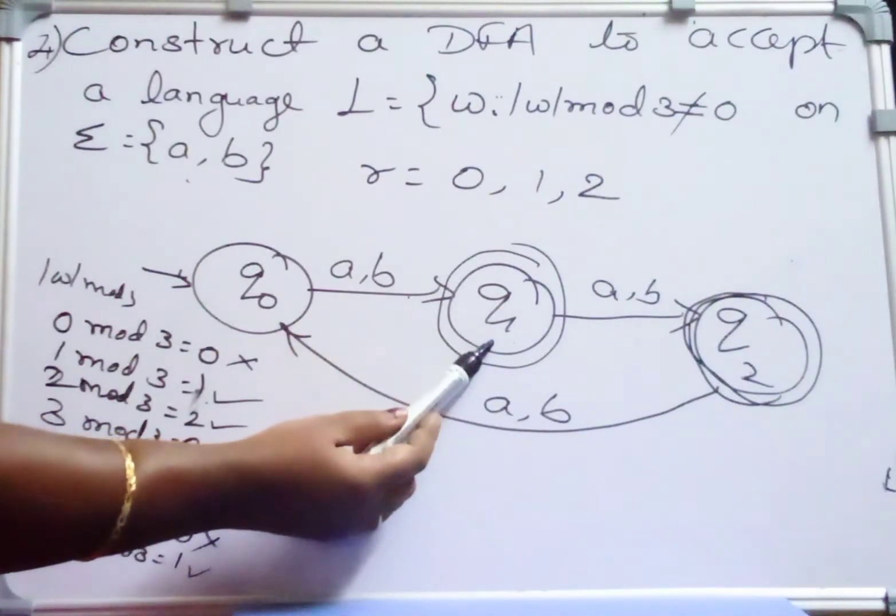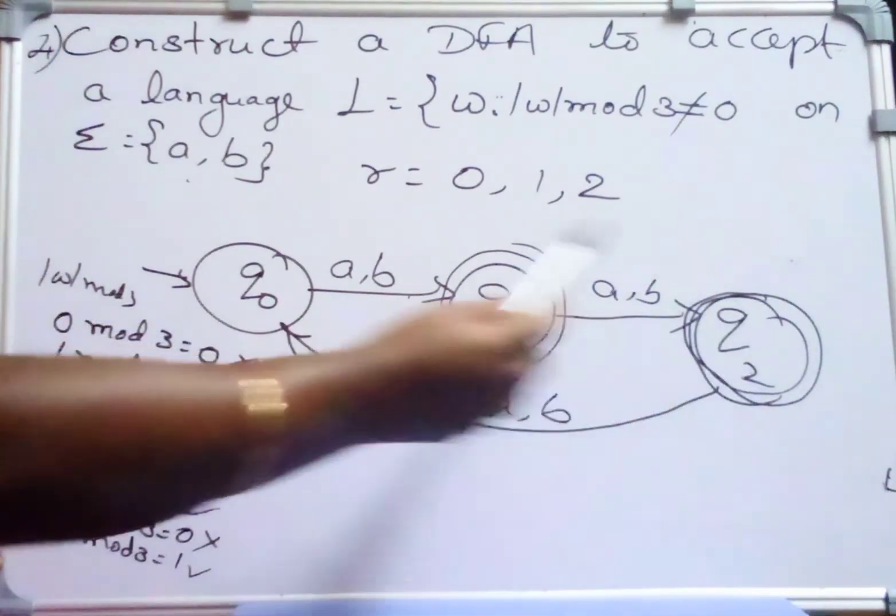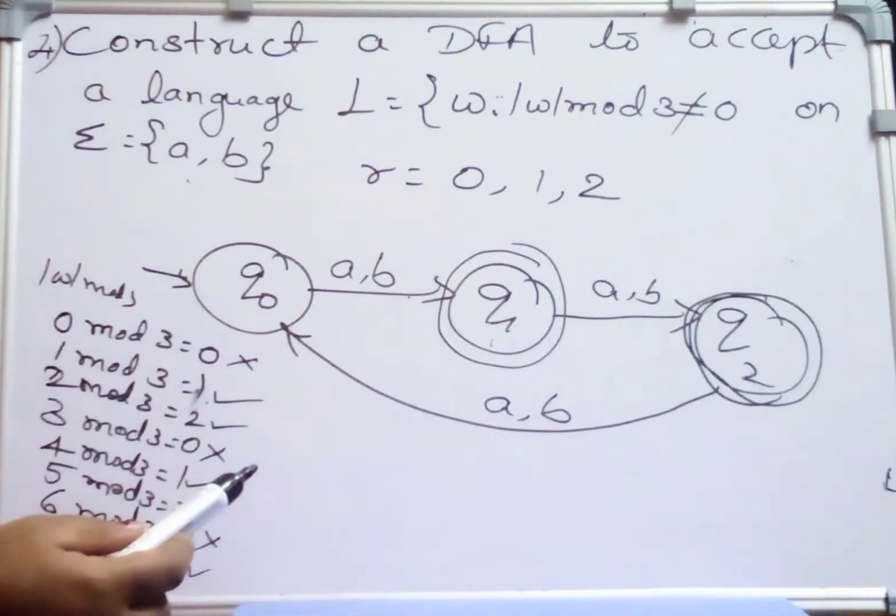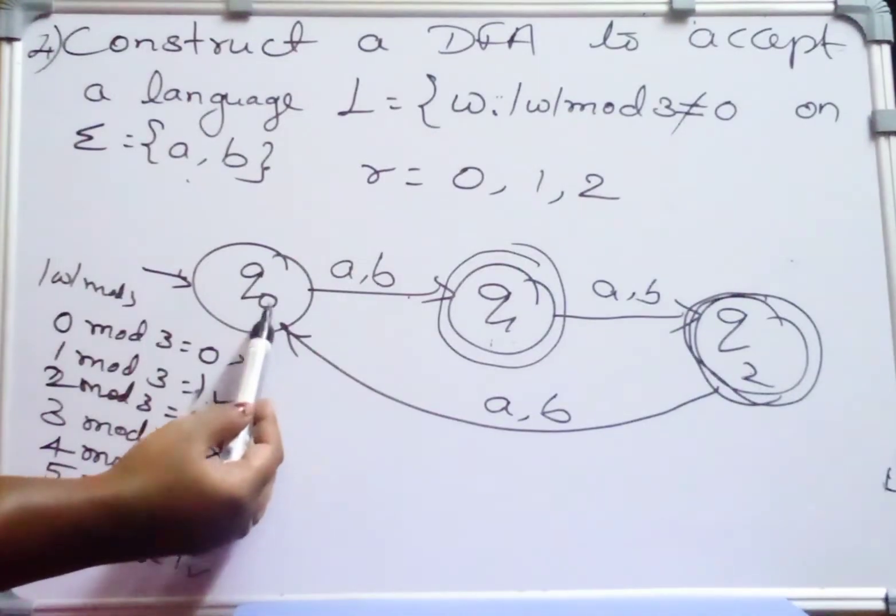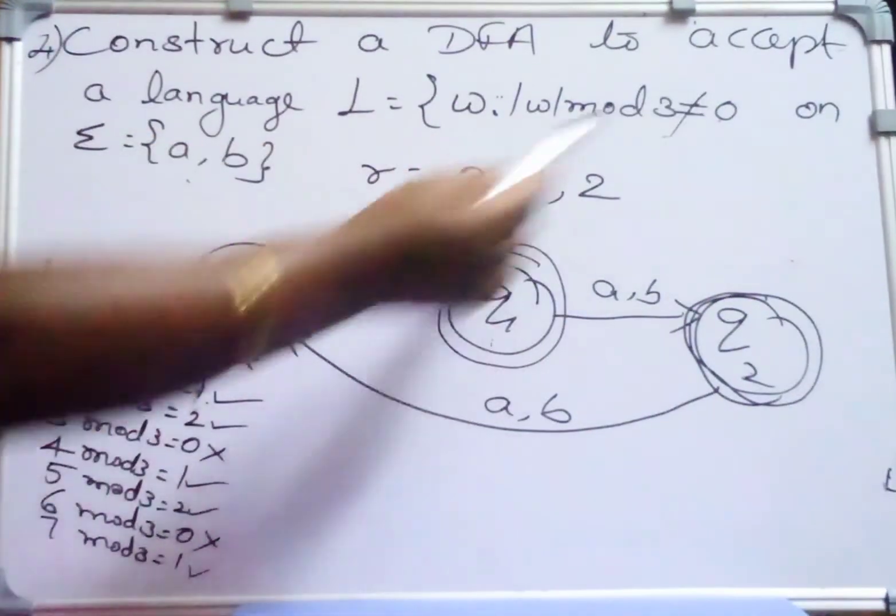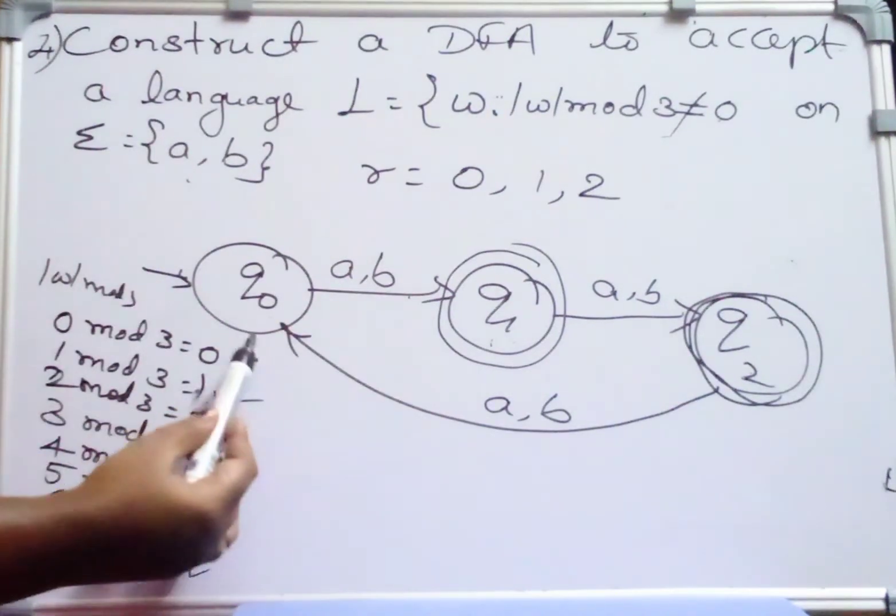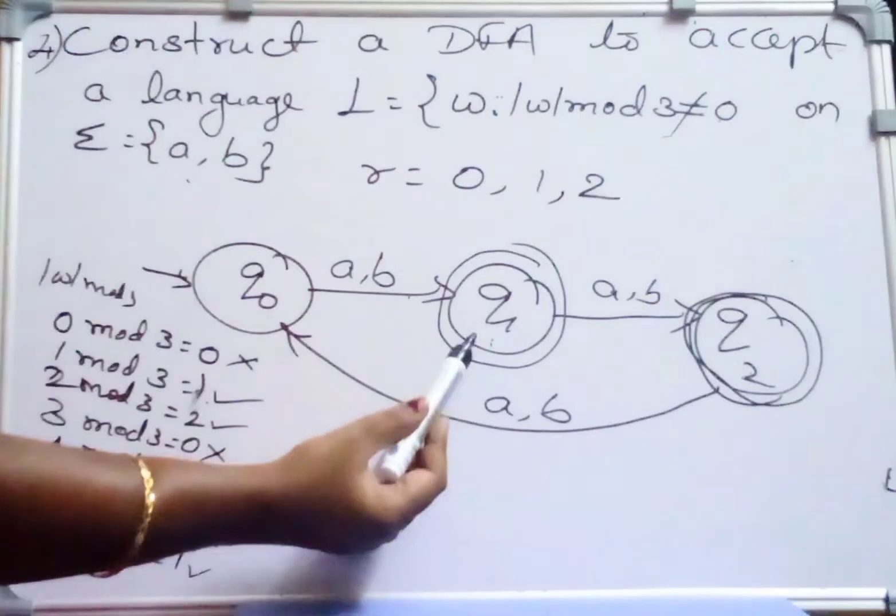Q1 represents all the strings with remainder 1 and Q2 represents all the strings with remainder 2 of modulo 3. And this Q0 represents the remainder with 0, modulo 3 remainder 0. So which is our final state now?